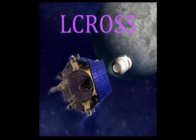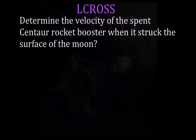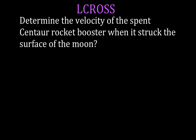About four or five minutes later, the LCROSS satellite flew through that plume of debris and analyzed it using all of its onboard sensors, determining there was approximately one to two percent water within that plume. In this video, we're going to use conservation of mechanical energy to determine the velocity of the Centaur booster rocket when it struck the moon.